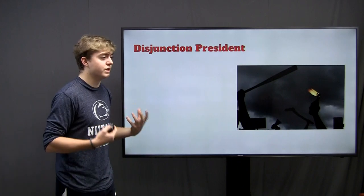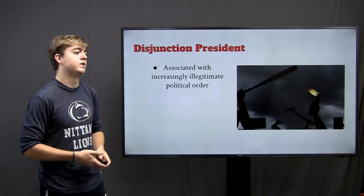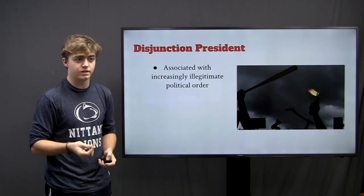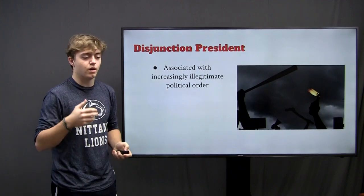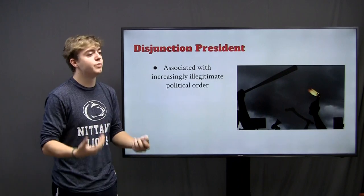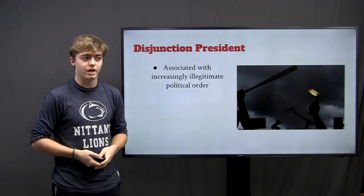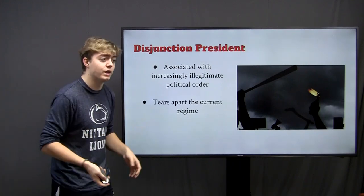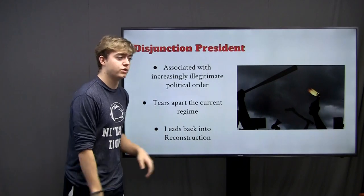Finally, we come to the Disjunction president. This is someone who is increasingly associated with an illegitimate order of politics — someone whose cabinet is often dysfunctional, whose party doesn't always work with the other side, and who is increasingly illegitimate in political stance. This often tears apart the entire regime in which it is set upon and leads back into a Reconstruction president.